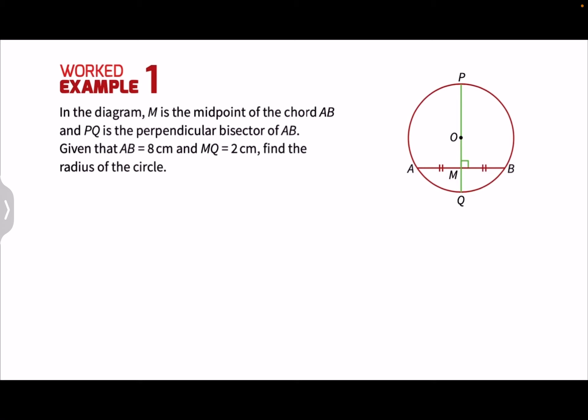So for this example, we are given a circle where BQ is the perpendicular bisector of AB. We observe that BQ is perpendicular to AB and BQ will bisect AB into two equal parts. And we have to find the radius of this circle.